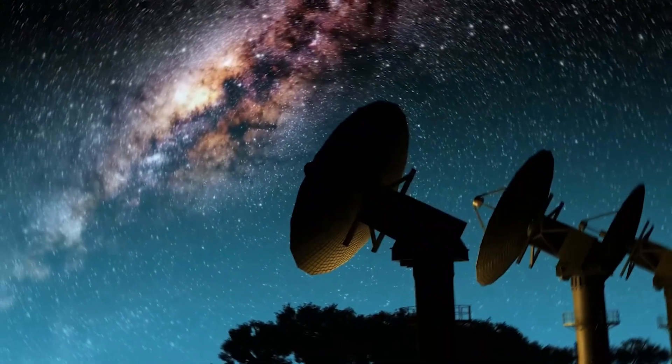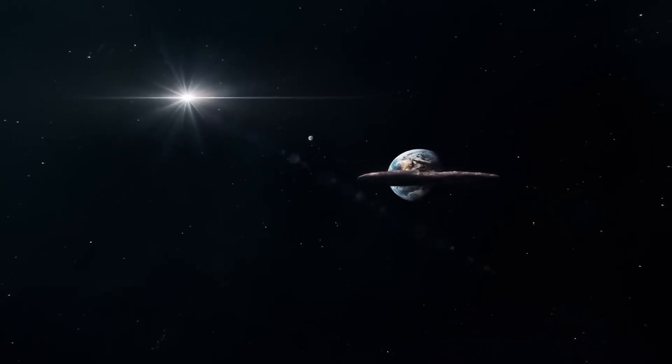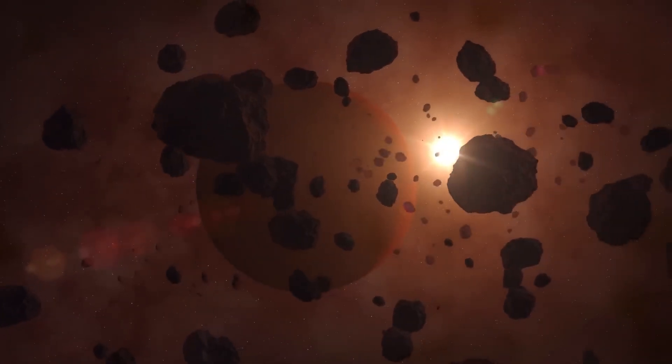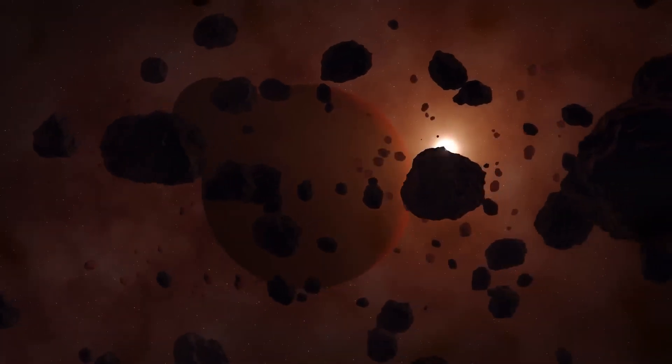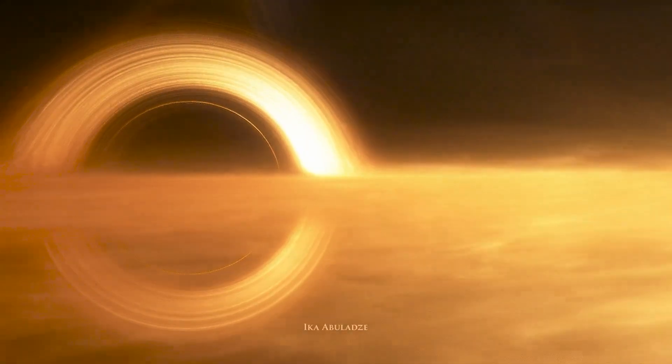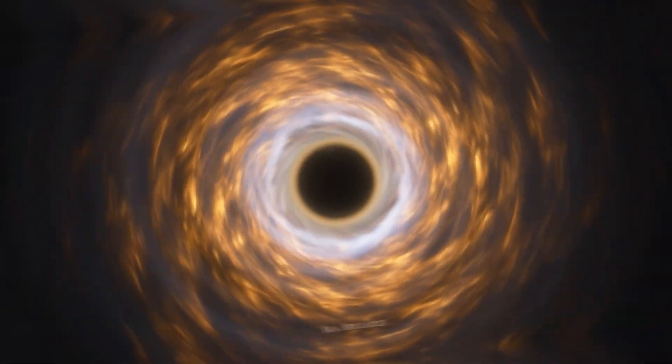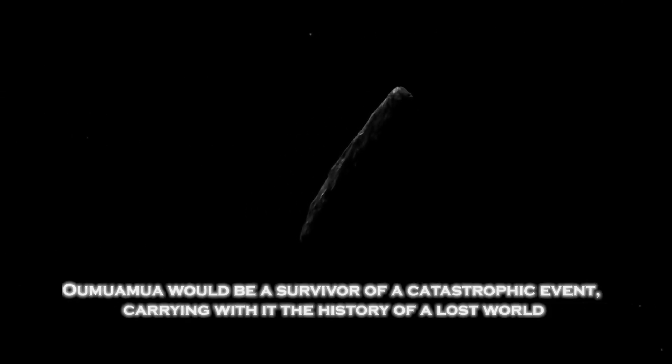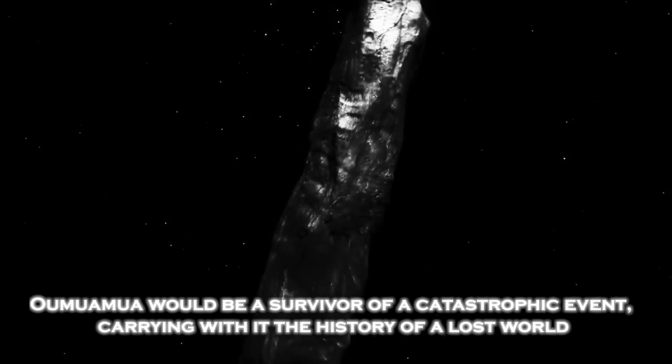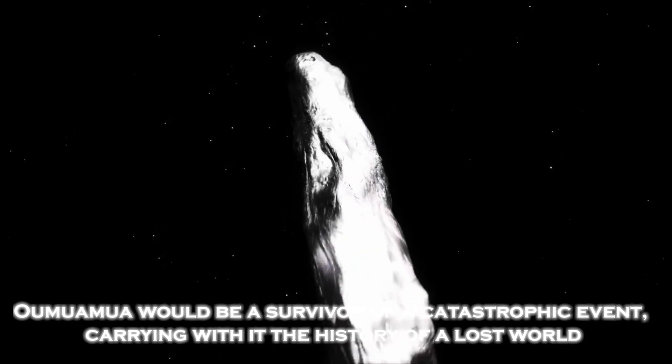One of the most recent theories suggests that Oumuamua could be a fragment of a planet destroyed by extreme gravitational forces. These forces, caused by a massive star or a nearby black hole, could have stretched and torn the planet apart, forming objects with unusual shapes. If this theory is correct, Oumuamua would be a survivor of a catastrophic event carrying with it the history of a lost world.